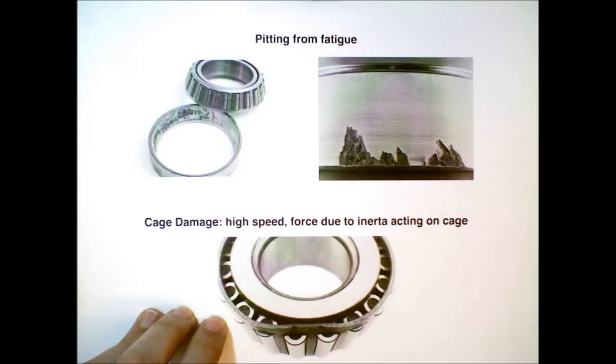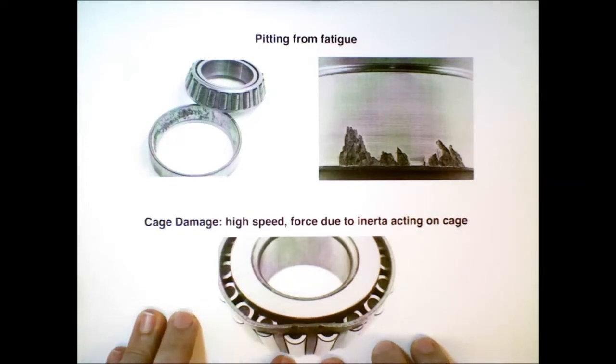And you might wonder, why would this cause problems? Here's one example. If we have very sudden stops or starts with the bearing, then there are significant inertial forces on the rollers and the cage. And this is the kind of damage that can happen when we have very sudden stops and starts.